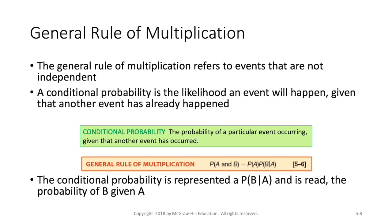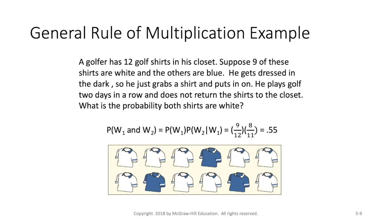So the conditional probability of B given A. So let's do an example and try to make this make more sense. So we got this golfer with 12 shirts in his closet and nine of them are white and the other three are blue and he gets dressed in the dark. So he just grabs the shirt, puts it on, doesn't know what color it is. Let's suppose he plays golf two days in a row. He does not return any worn shirts to the closet.